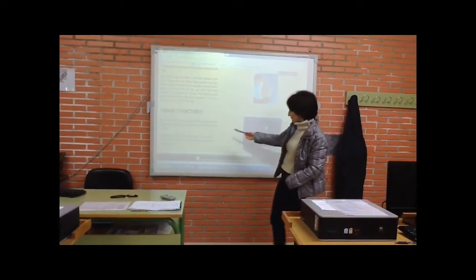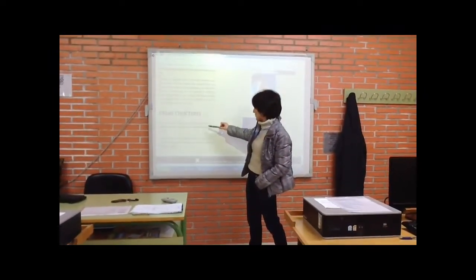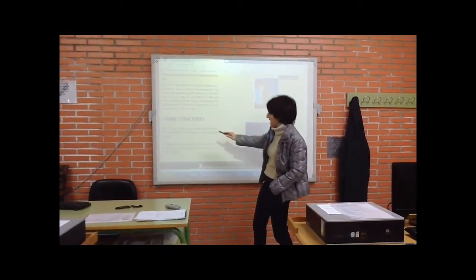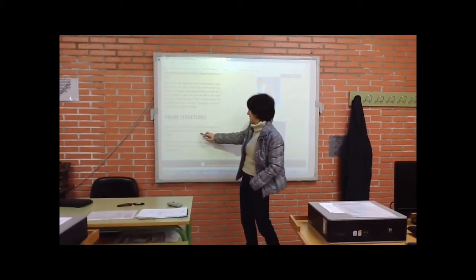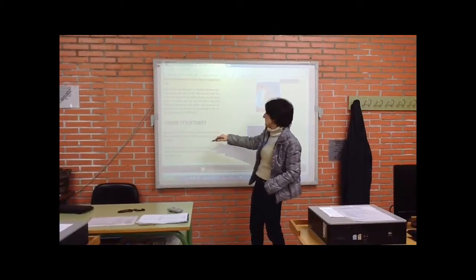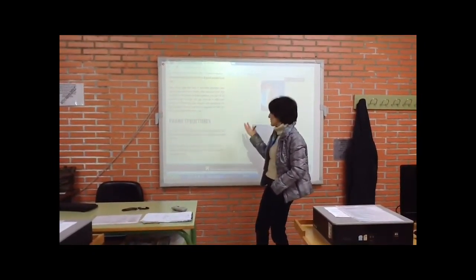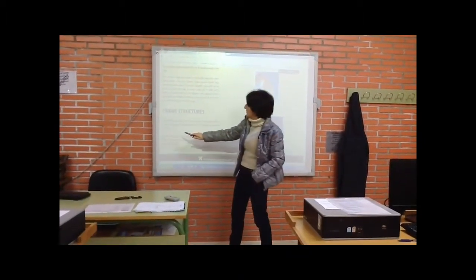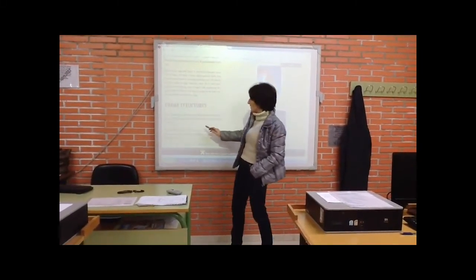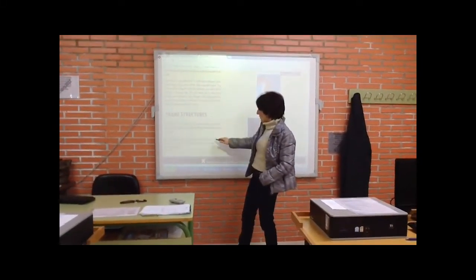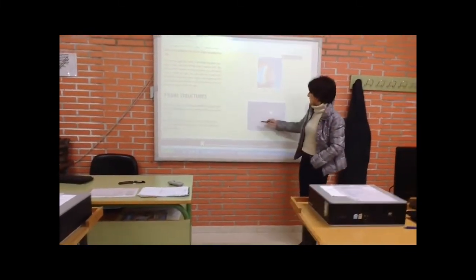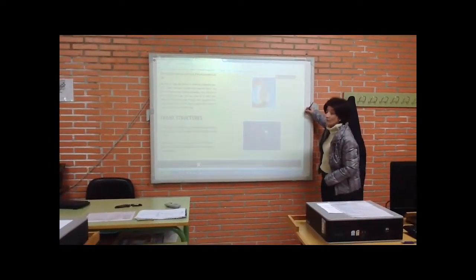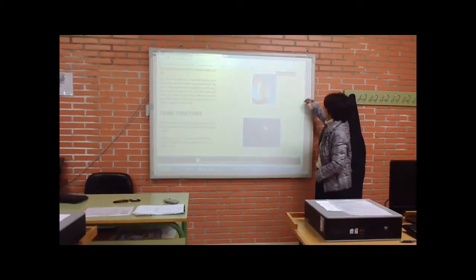Frame structures are structures that have a skeleton associated with them. An example is leaves, which have a skeleton with skin on the skeleton. If the structure has no skin on it, we call it an open frame. A spider web is an example of an open frame.